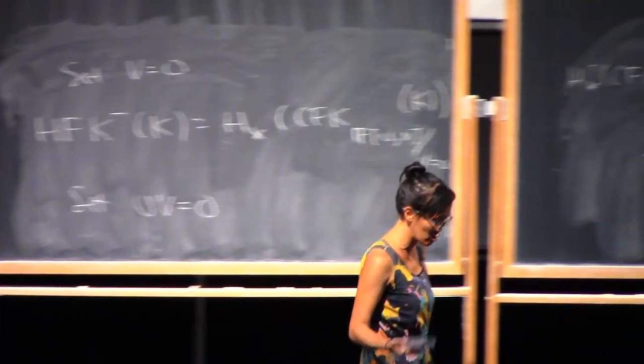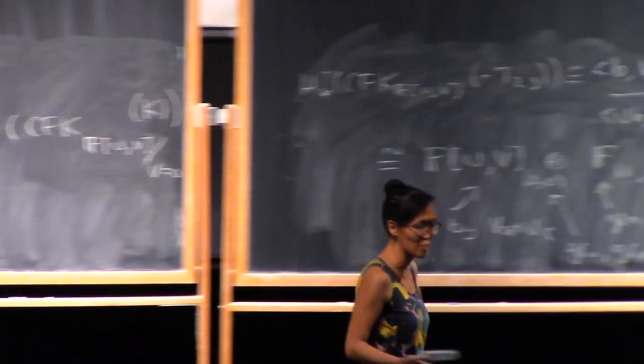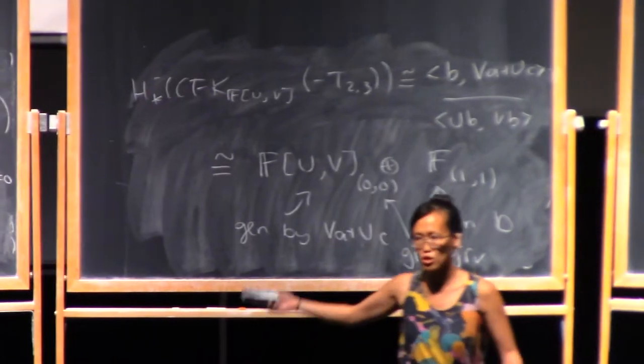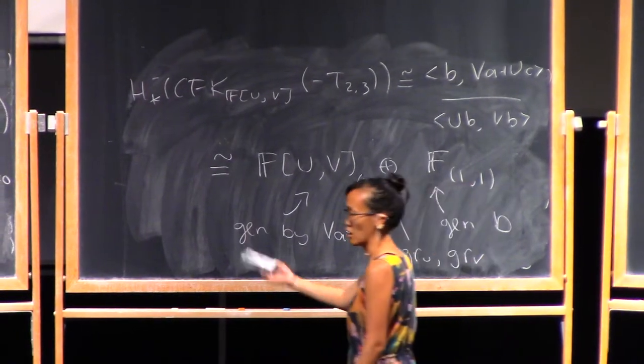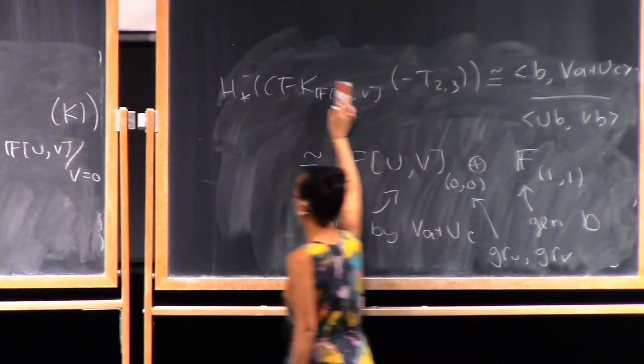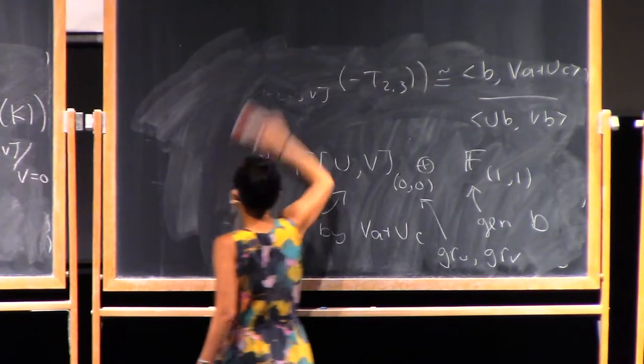The point is there are lots of different algebraic modifications you can do, and as long as you're doing something sensible, you're going to get out an invariant.